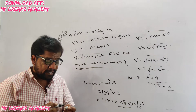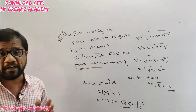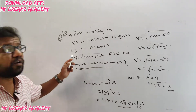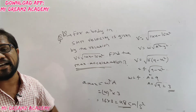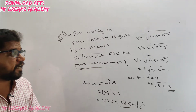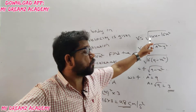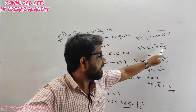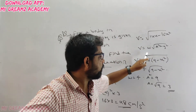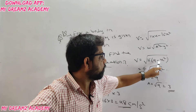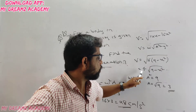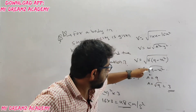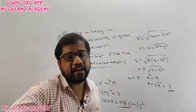Once more: comparing v = √(144 − 16x²) to v = ω√(A² − y²), take 16 common to get 4√(9 − x²). So ω = 4 and A = √9 = 3. Maximum acceleration = ω²A = 16 × 3 = 48 cm/s².